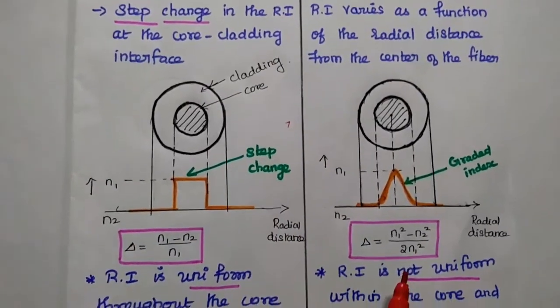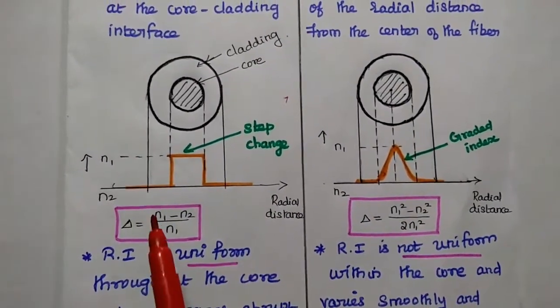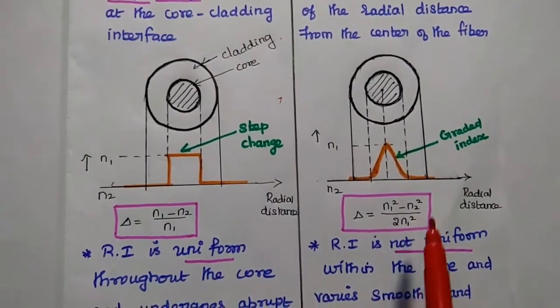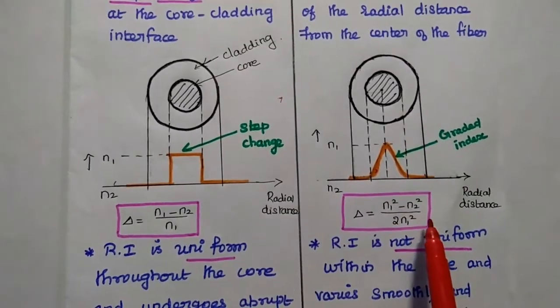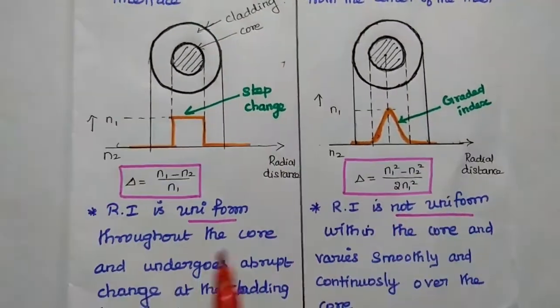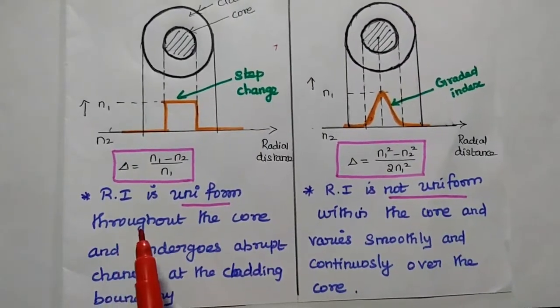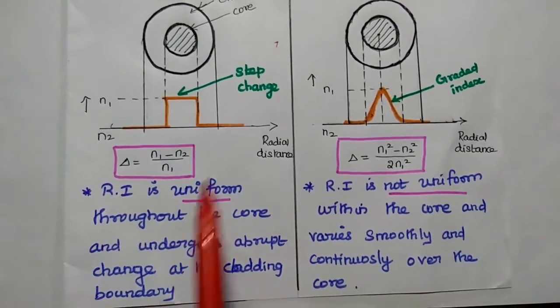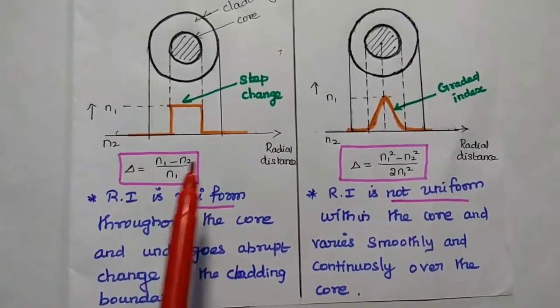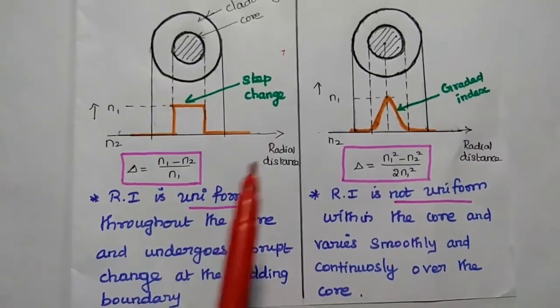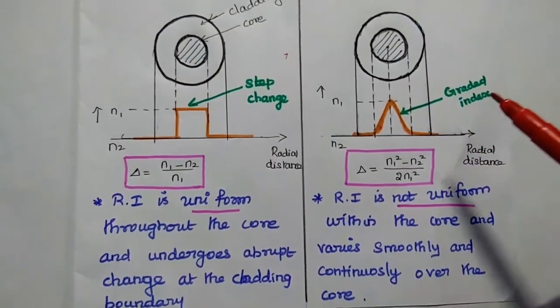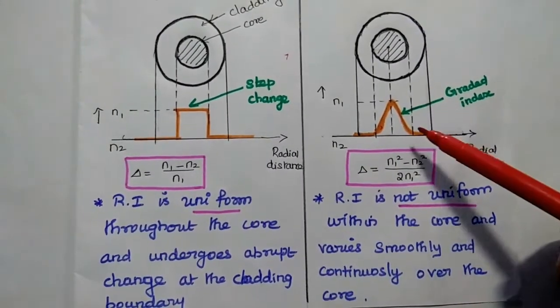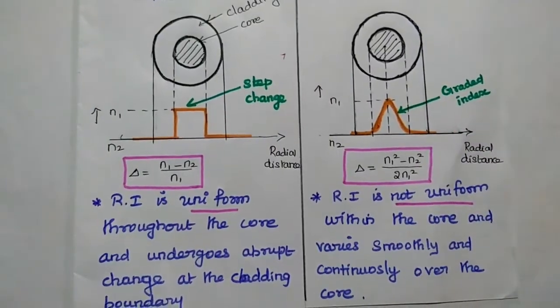Here the index variation can be given as N1 minus N2 by N1 for this step index. For graded index, its value is N1 squared minus N2 squared by 2N1 squared. In step index, the refractive index value is uniform throughout the core diameter and undergoes abrupt, that means sudden change at the cladding interface. But in this graded index, the refractive index is not uniform within this core and varies smoothly and continuously over the core.